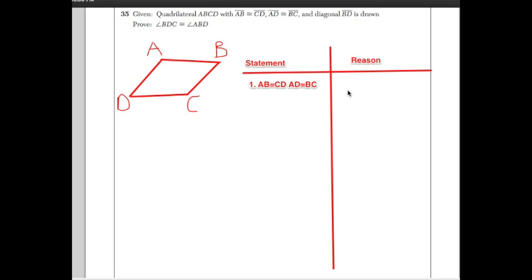Side-side-side postulate basically says that if two triangles have the same exact length of sides, that means that they are congruent triangles because the corresponding angles would be congruent.